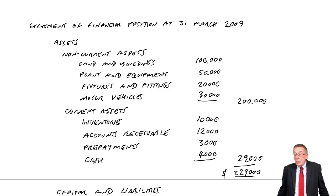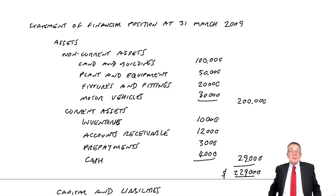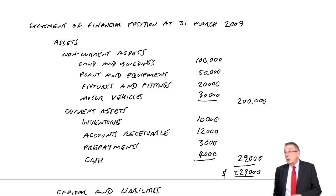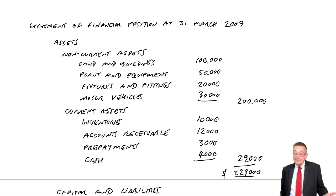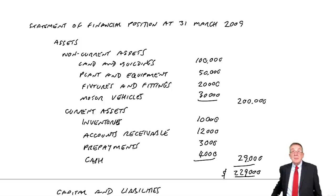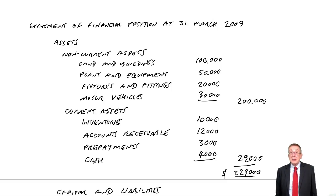It'll be anything they want. A lot do choose 31st December for obvious reasons, but it could be end of January, end of June, whatever they want. They've chosen 31st of March, so every 31st of March they would produce this statement.